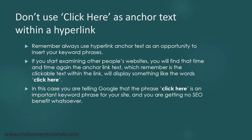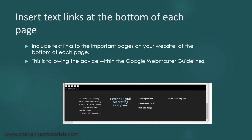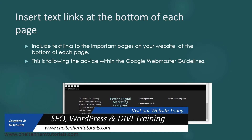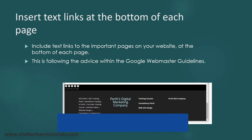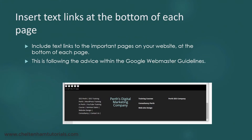If you go back to the Google Webmaster Guidelines, which is always a good starting point for SEO, they clearly say that Google likes web pages where you have a couple of text links to all your important pages. Something I tend to do is have an area at the bottom of my website where, as you can see, I've got links to 'SEO Perth', 'SEO training Perth', 'WordPress training in Perth', 'YouTube training course', 'seminar dates', 'web design consultancy', and 'contact us', as well as a few other links. These are clickable text links, and it's a very good idea to have lots of text links within your website, packing them with your important keyword phrases without overdoing it.